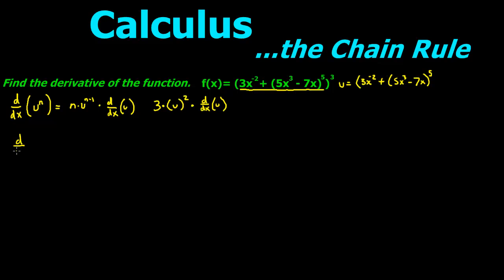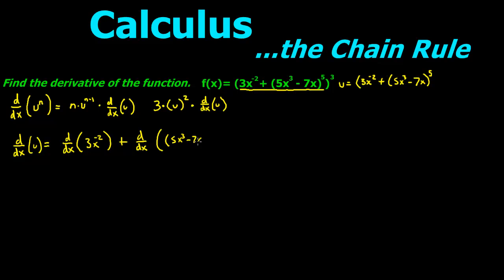U is just going to be this big long expression, times the derivative of u. The derivative of u is going to equal the derivative of 3x to the negative 2 plus the derivative of 5x to the third minus 7x all to the fifth power. So we take the derivative of this piece using the power rule, and 3x to the negative 2 becomes negative 6x to the negative 3.